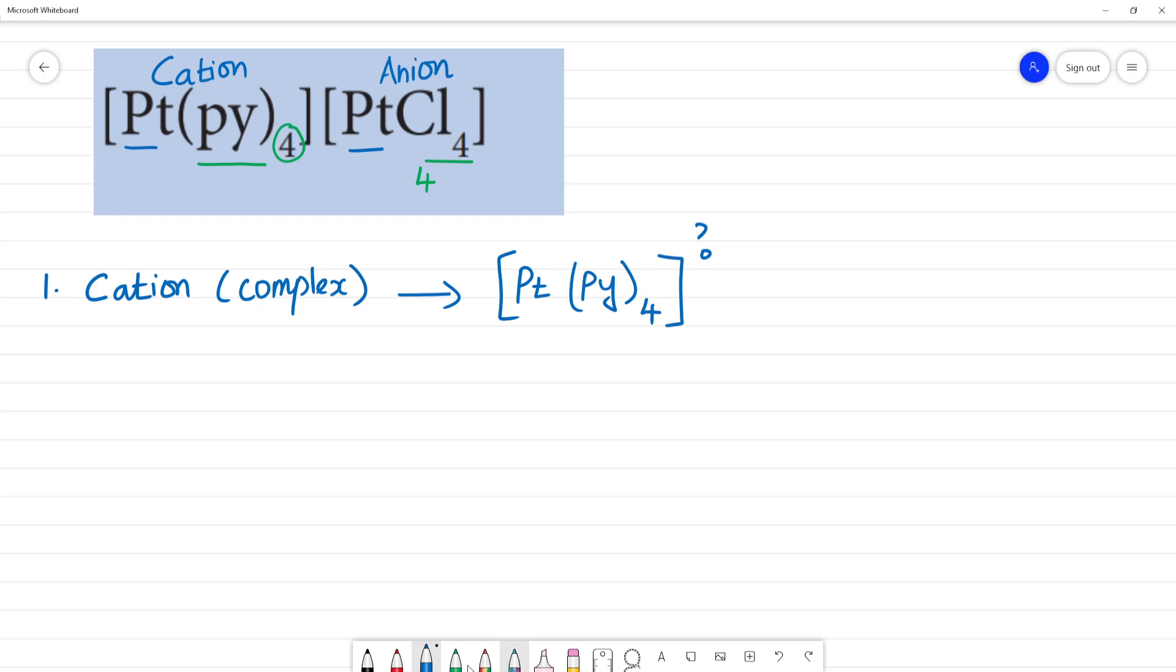This is the charge of the complex. To calculate, if platinum is x, plus pyridine 4 times - the charge is neutral ligand, so 0. Then plus, if platinum is x plus, chlorine is negative ligand, so minus 1. Total charge is 0, so x plus x cancel. 2x equals 4 and x equals 2.